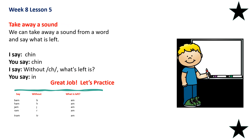Alright, now let's take away a sound. We can take away a sound from a word and say what is left. Say chin — without the ch, what is left? In. Nice job. Let's practice. Say bam — without the b, what's left? Am. Say ham — without the h, what is left? Am. Say jam — without the j, what is left? Am. Say ram — without the r, what is left? Am. Say tram — without the tr, what is left? Am. Nice job.